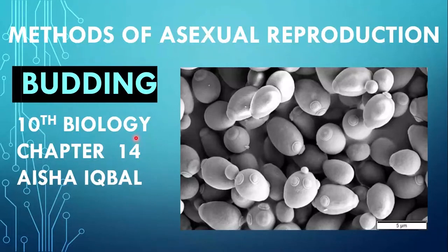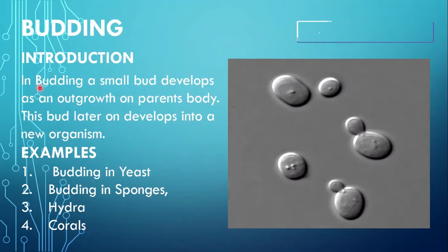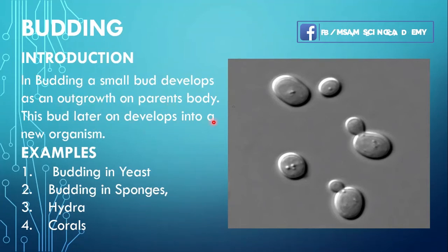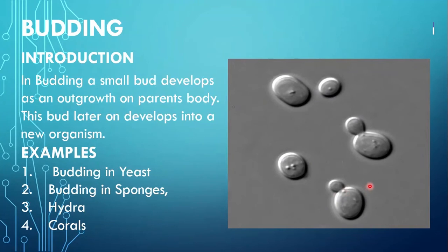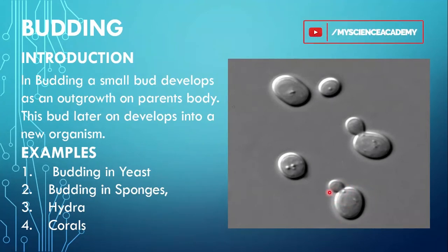Welcome to our channel viewers in the biology 10th class, chapter number 14. In Methods of Asexual Reproduction, today we will discuss the 4th method, that is budding. In budding, a small bud develops as an outgrowth on the parent's body. This bud later on develops into a new organism. Budding is that type of asexual reproduction in which a bud grows on the parent cell and later on develops into a complete new organism.